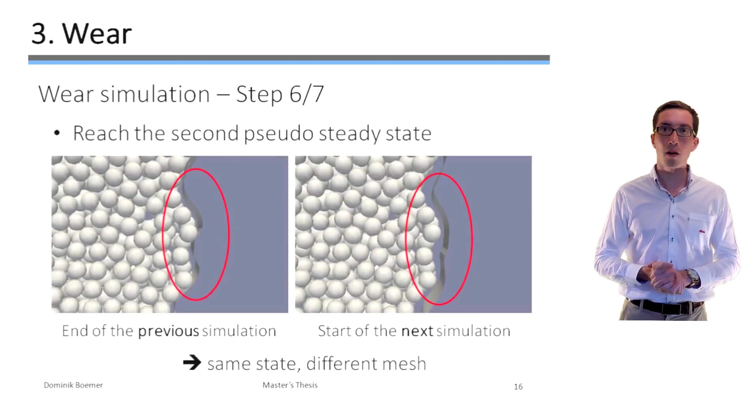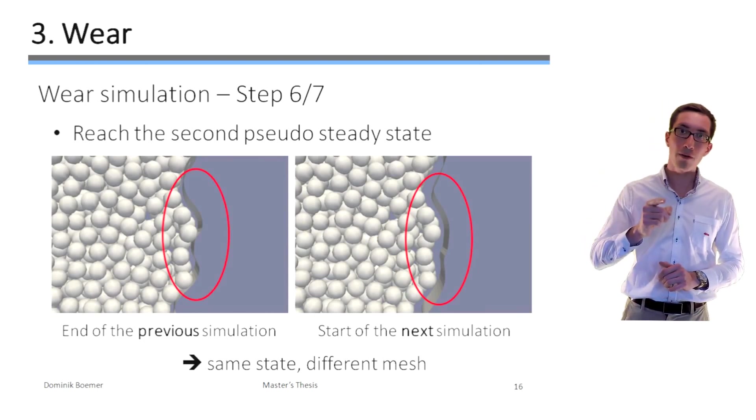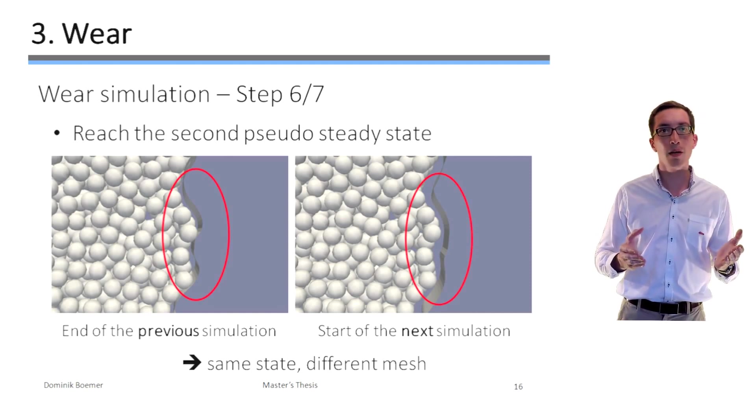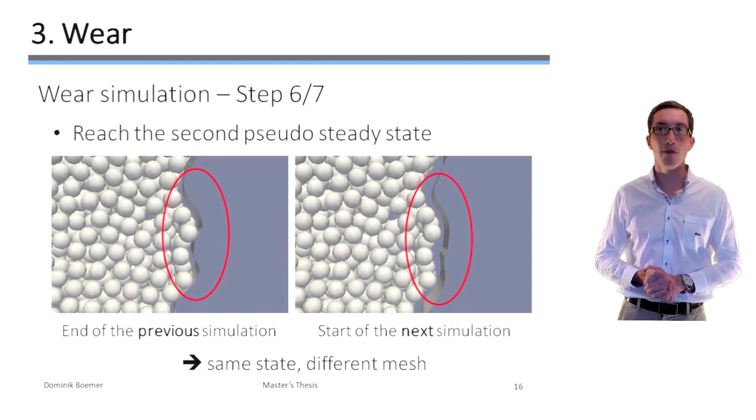In order to not have to always start from the beginning with the balls at rest which have to be lifted up which fall down and so on, we simply use the final state of the balls in the previous simulation as their initial state in the following simulation. That way, the initial state of the balls is already closer to their second pseudo steady state.